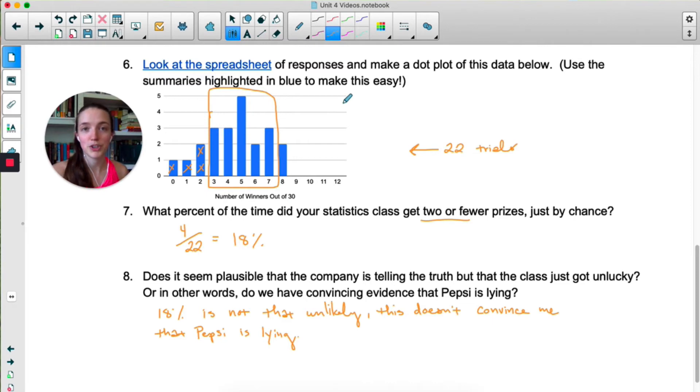Now, if you are doing this sometime in the future and your probability is like less than 5%, that's some convincing evidence that Pepsi is lying. Let's say that by the time you watch this there have been 100 trials instead of just 22, but no one else has gotten two, one, or zero winners. So there's still only four people that have two or fewer wins. That'd be four out of 100, only a 4% chance of getting two or fewer winners. That would be extremely unlikely and very weird and I would be extremely suspicious of Pepsi. But four out of 22, 18%, it's not that unlikely. I'm not suspicious of Pepsi. If this percent was under 5%, I would probably be suspicious.